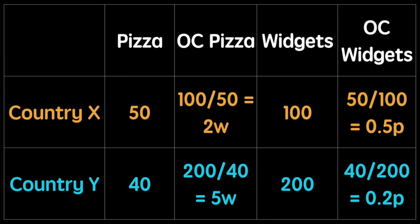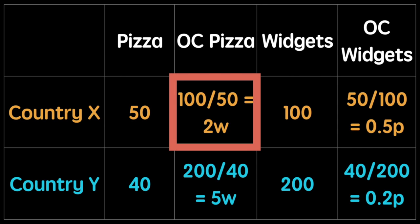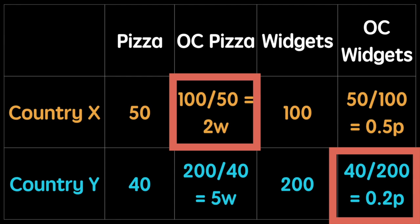This information is from the previous video on comparative advantage where we discovered that Country X has the comparative advantage in pizza production, whereas Country Y has the comparative advantage in widget production. Using this information, I will plot their production possibilities and follow it up with the trading possibility curve for each country.